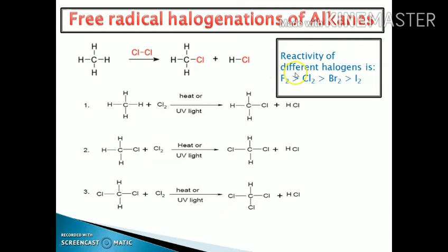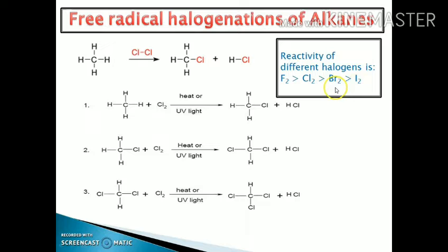The reactivity order of different halogens during free radical halogenation is: fluorine, chlorine, bromine, and iodine. Chlorination is highly exothermic in nature. By chlorination, bromination, and iodination, we can easily prepare chloroalkane, bromoalkane, and iodoalkanes.